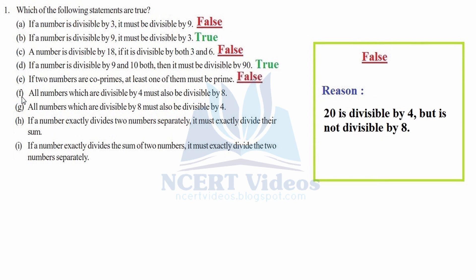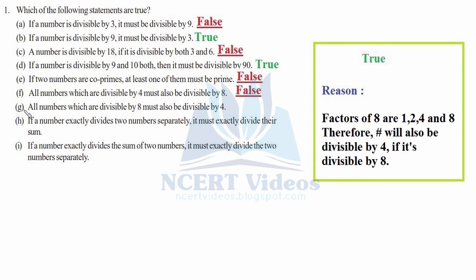Statement F: all numbers which are divisible by four must also be divisible by eight. It says 'all', so this is false. Statement G: all numbers which are divisible by eight must also be divisible by four. This is true. The factors of eight are one, two, four, and eight, and four falls among the factors, so the number will also be divisible by four.